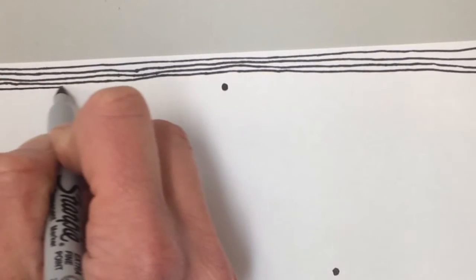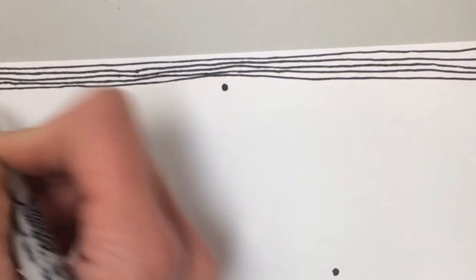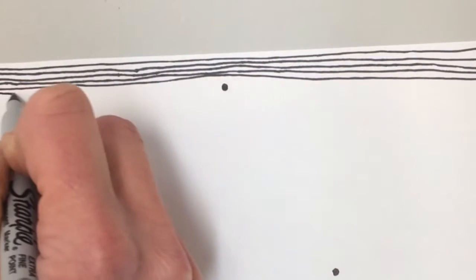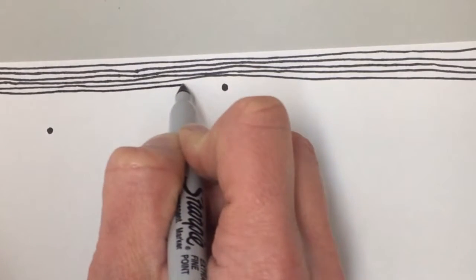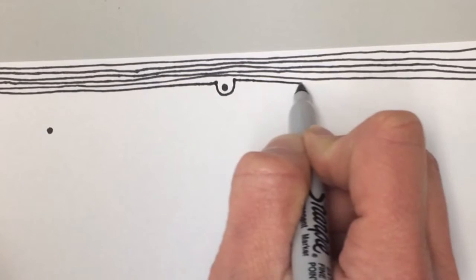When you get to a dot, the rule is you can't go through the dot. You have to go under it. That's how the mountains are going to start to form. So here I come to my first dot. I have to stop, go under it, and then I can continue my line.